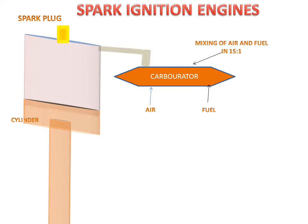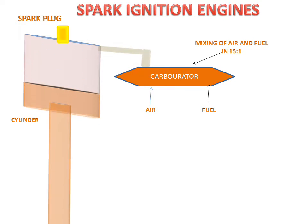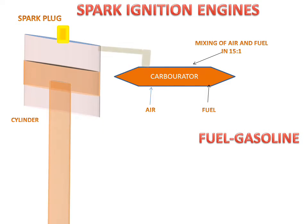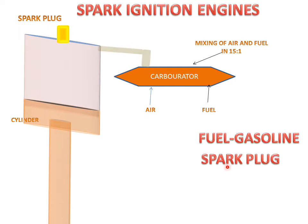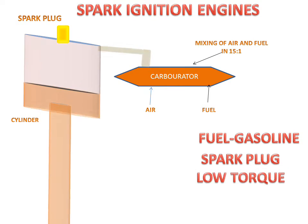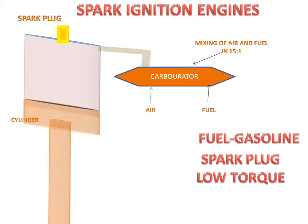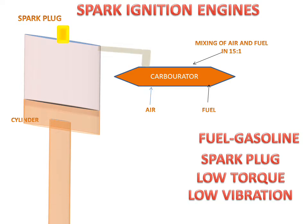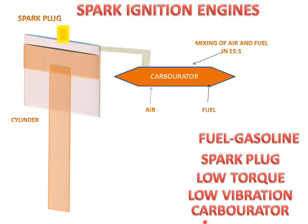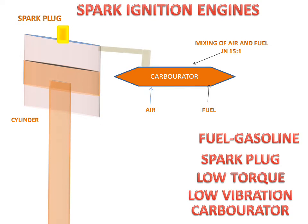The components of the spark ignition engine: the fuel used is gasoline or petrol. A spark plug is used for the ignition process. The SI engine has low torque compared to the CI engine due to its smaller size, and it also has low vibration because of its compact size. It uses a carburetor for mixing air and fuel.